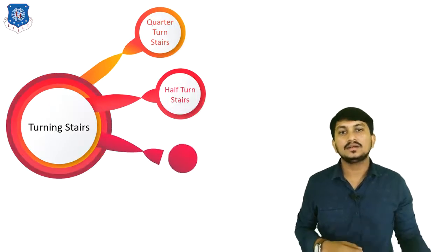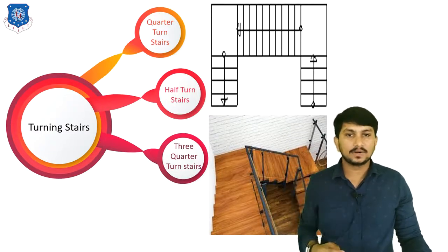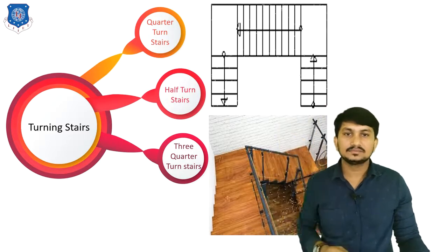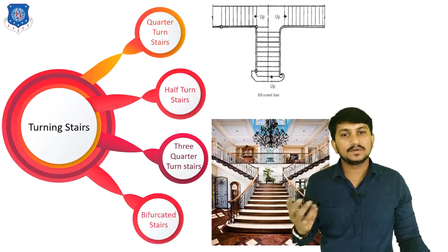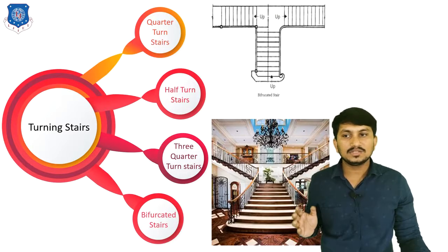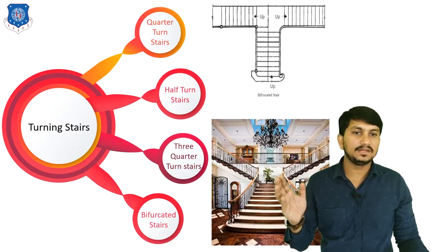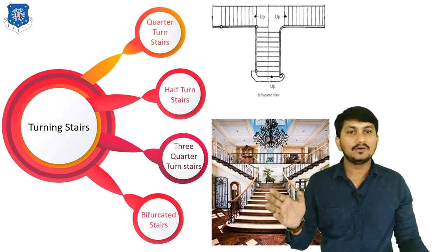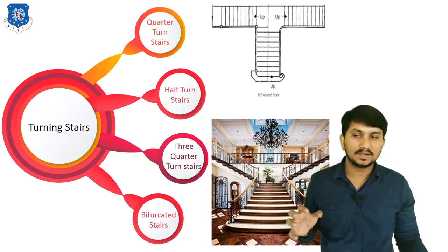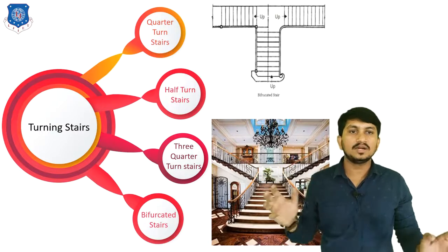Next is three-quarter turn stairs, where three flights are provided — first flight, second flight, and third flight. The fourth type of turning stair is the bifurcated stair. Here, the user starts going up one flight and then has the option of two flights — either on the left side or the right side. It is mainly provided in government buildings or entrance halls.